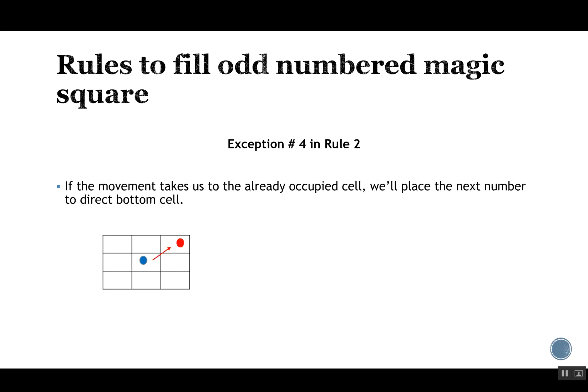Exception four is really important: if the movement takes us to an already occupied cell, we place the next number in the direct bottom cell instead. Since each cell can hold only one number, whenever moving up-right diagonally lands on a filled cell, we simply go one step down from our current position.